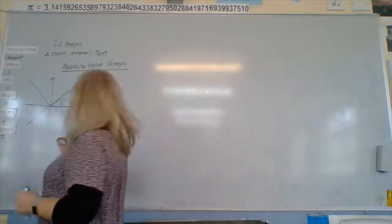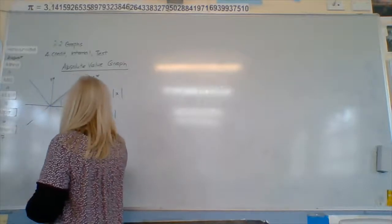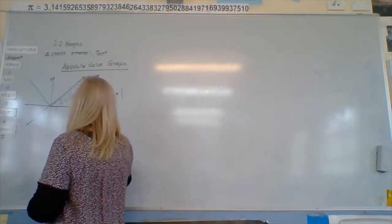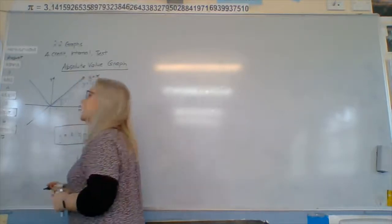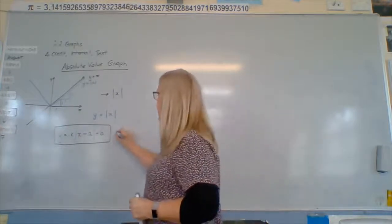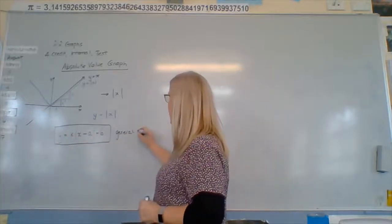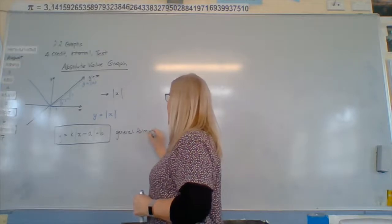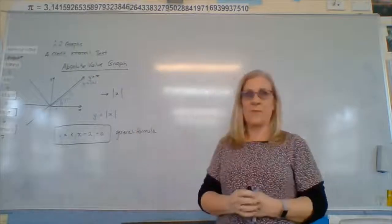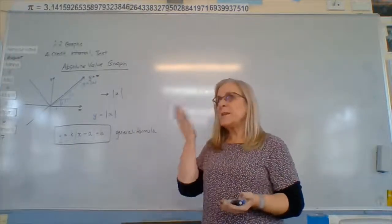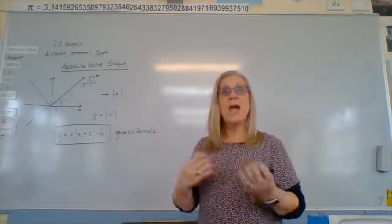So the general formula for that is y equals k absolute value x minus a plus b. That's our general formula. So it still has the part we're interested in, y equals absolute x absolute value. But the other parts, the a, b and the x, sorry the k, do things to the graph. So when we're given an equation, we need to identify what a, b and k are and then draw the graph.